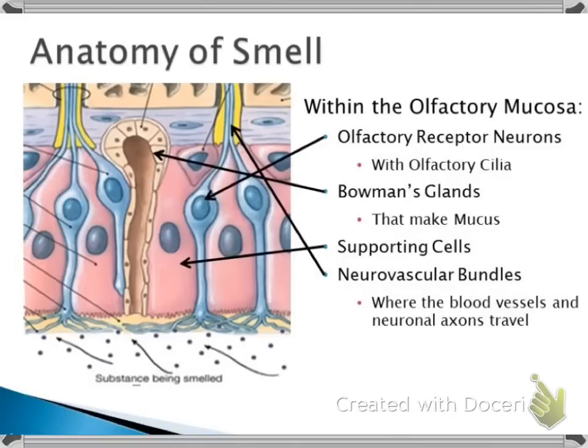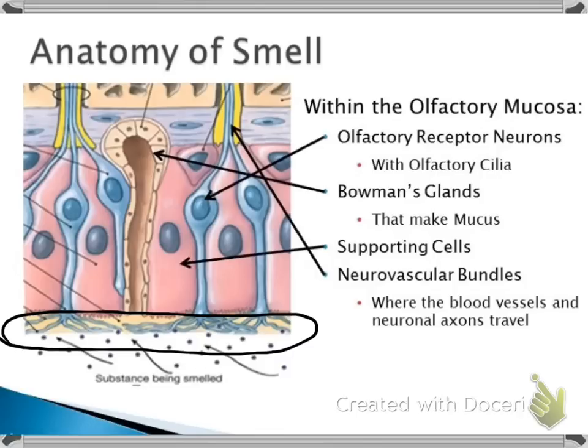As you can see in this image, the olfactory receptor neurons are intermingled with supporting epithelial cells within the olfactory mucosa. The mucus layer lines the surface of the olfactory mucosa. These fine strands are the cilia of the olfactory receptor neurons. This is where the ligands bind to the olfactory receptor neurons and trigger action potentials within them.